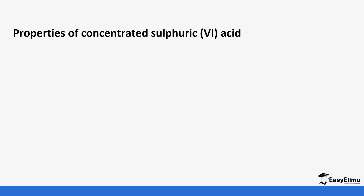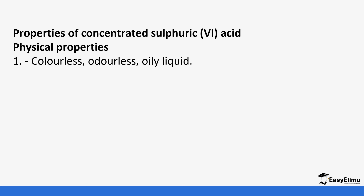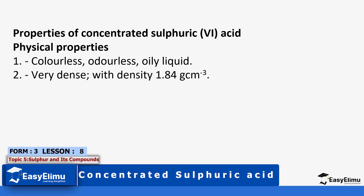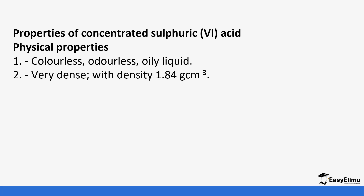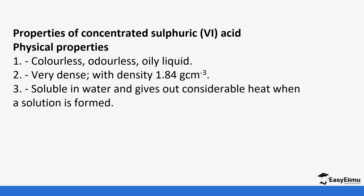Concentrated sulfuric acid has a few physical properties. It is usually a colorless, odorless, oily liquid and it is very dense, with a density of 1.84 grams per centimetre cubed. It is very soluble in water and it gives off heat when a solution is formed.